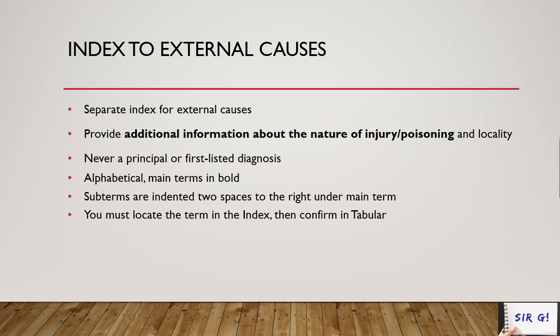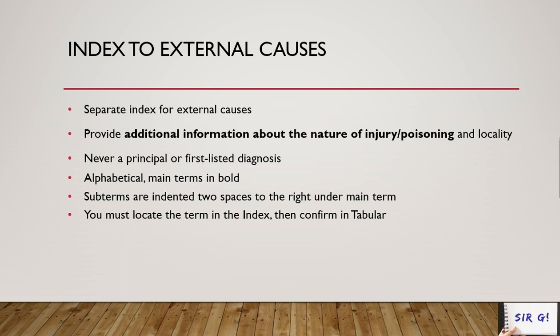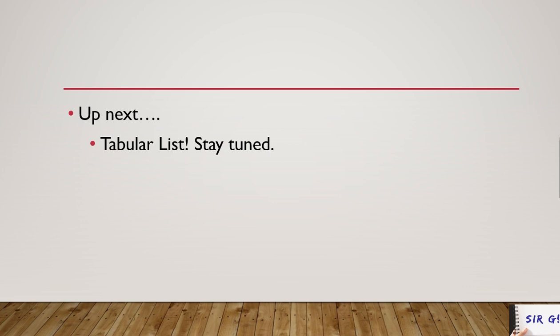That concludes the alphabetic index sections: index to diseases and injuries, table of neoplasms, and table of drugs and chemicals. The index to external causes is a separate index for external causes used for statistical purposes — providing additional information about the nature of injury, poisoning, and locality. It is never listed as a principal diagnosis. I will discuss external causes further in the chapter-specific guidelines.